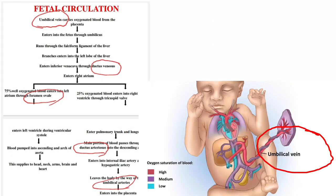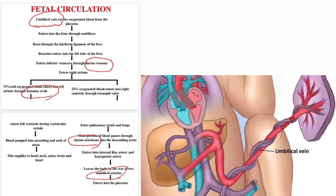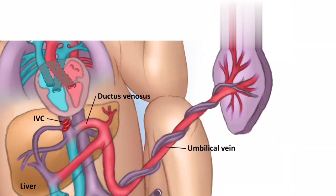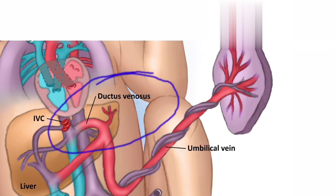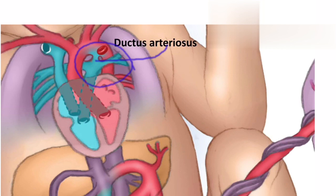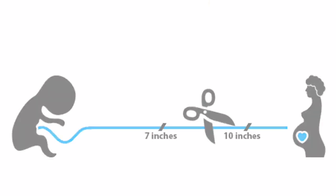Here we should know the special structures in the fetal circulation. The first structure is the umbilical vein, which carries oxygenated blood from the placenta to the fetus. Next is the umbilical arteries, which carry deoxygenated blood from the fetus to the placenta. Next is the ductus venosus, a shunt connecting the umbilical vein and inferior vena cava. The fourth structure is the foramen ovale, which shunts blood from the right atrium to the left atrium, bypassing the lungs. The last structure is the ductus arteriosus, which shunts blood from the pulmonary artery to the aorta, bypassing the lungs.